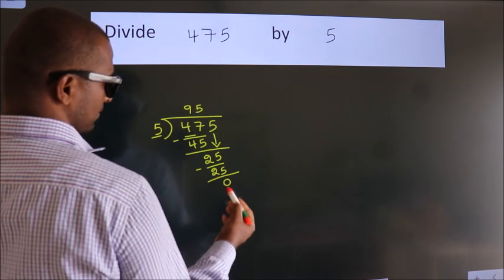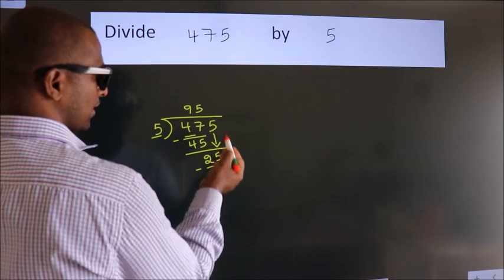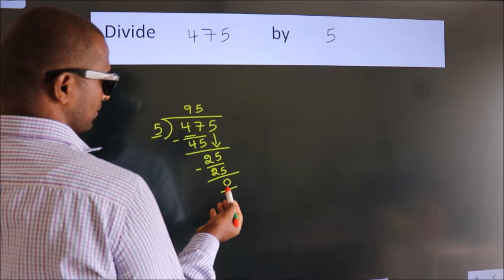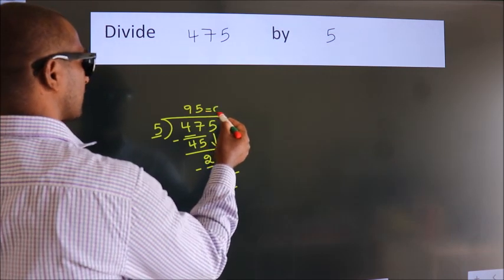We get 0. After this, no more numbers to bring down. We got remainder 0, so this is our quotient.